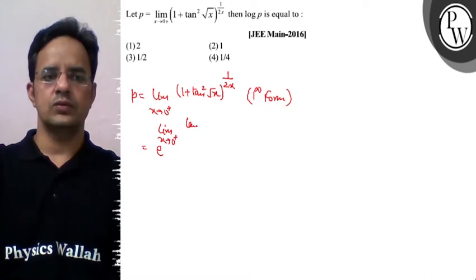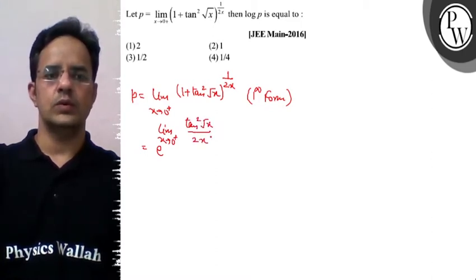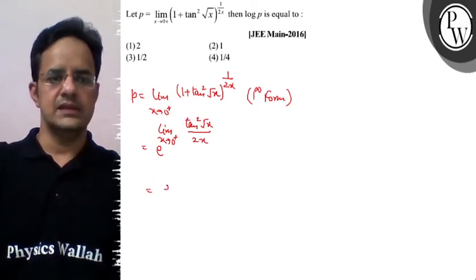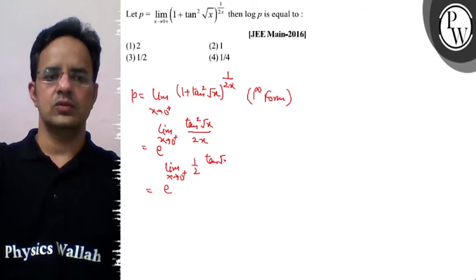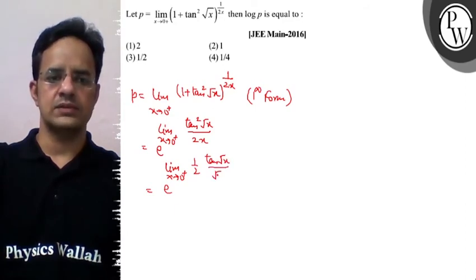It is 10 square root x divided by 2x. Ise simplify kiya jaye then we get limit x tending to 0 plus yaha me e se likh sakte hai 1 upon 2 and 10 root x upon root x whole square